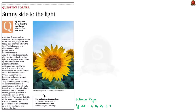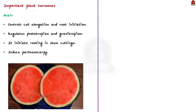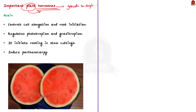Have you ever wondered why the sunflower always faces the sun? This article addresses that question. First, we must cover some basics. Like us humans, plants also have hormones. Plant hormones are naturally occurring chemical substances produced within plants that regulate various physiological processes. These hormones play crucial roles in plant growth, development, and responses to environmental stimuli. There are five important plant hormones. The first one is auxin. Auxin controls cell elongation and helps roots to grow. They guide the direction of plant growth and how plants respond to light and gravity.